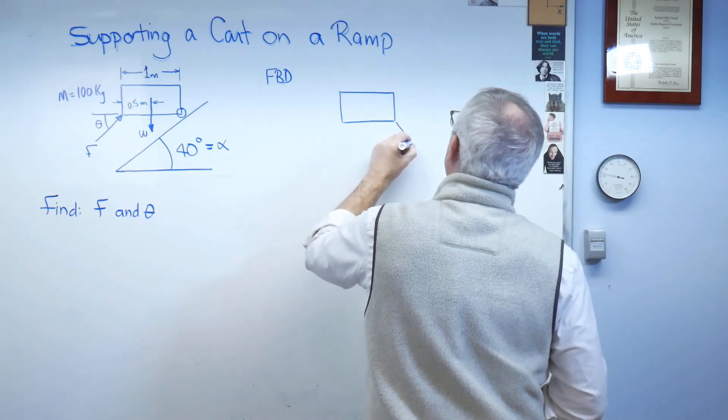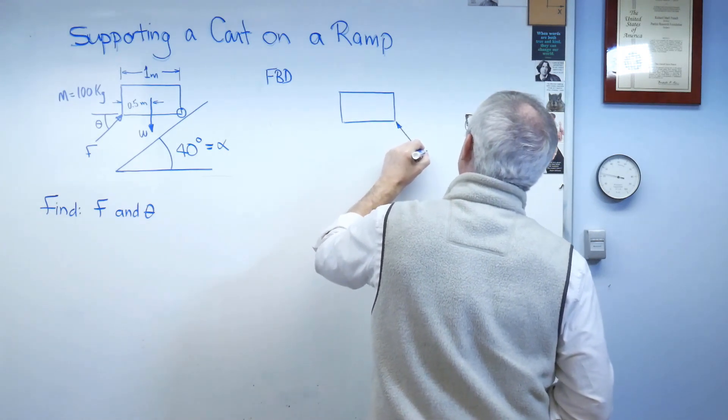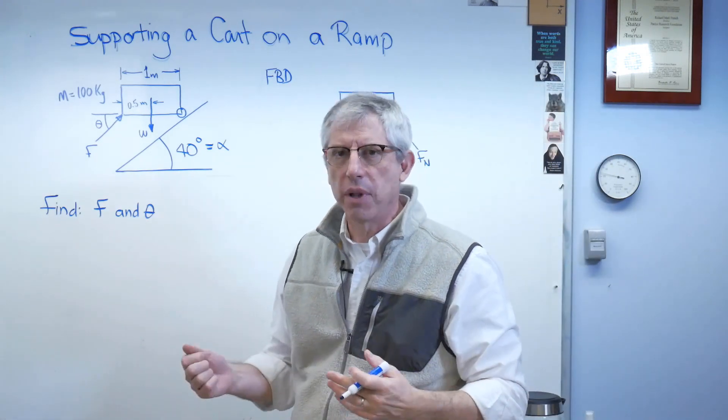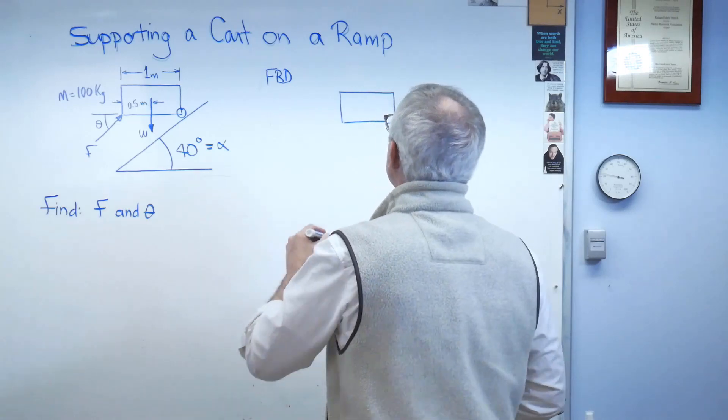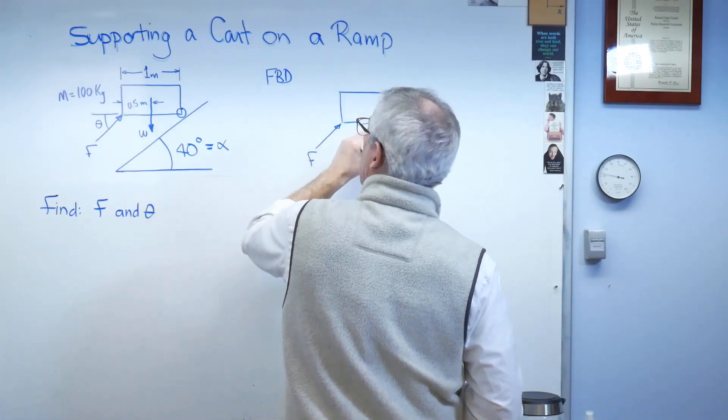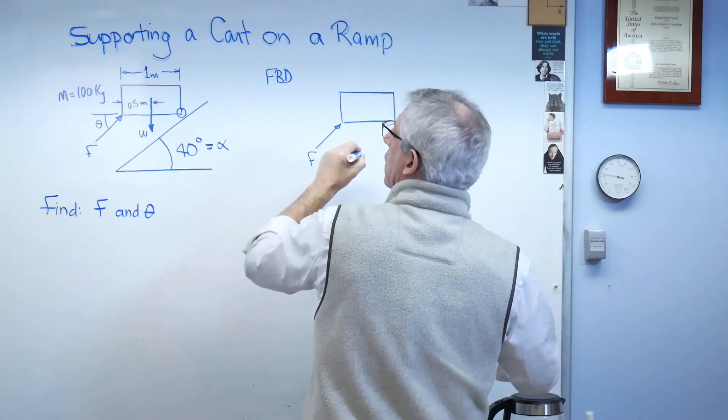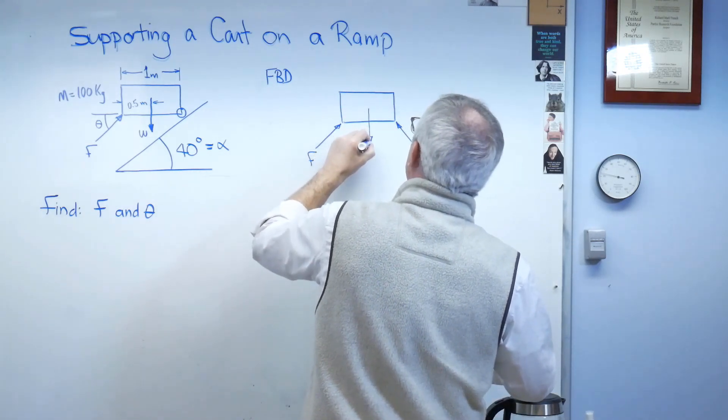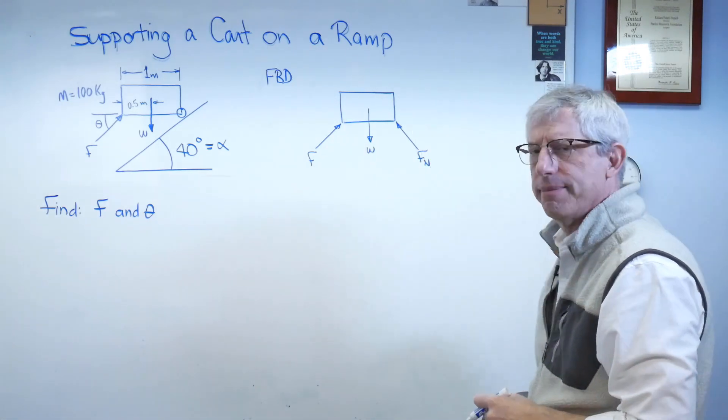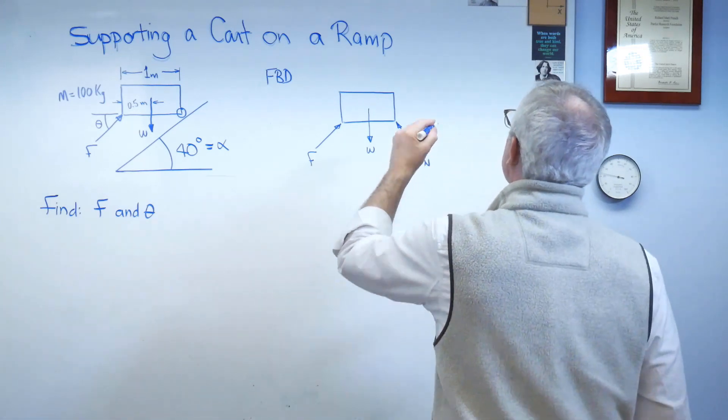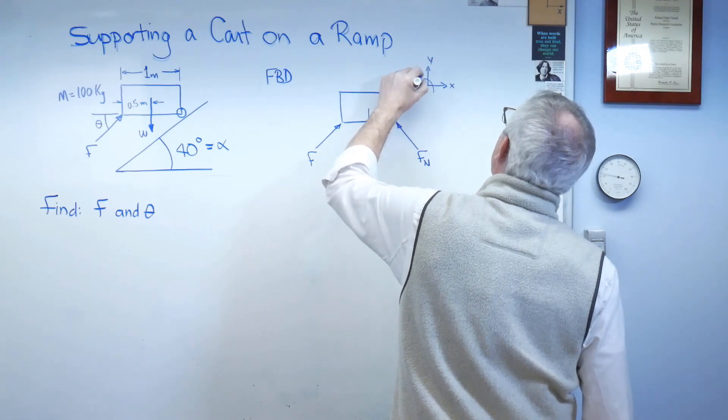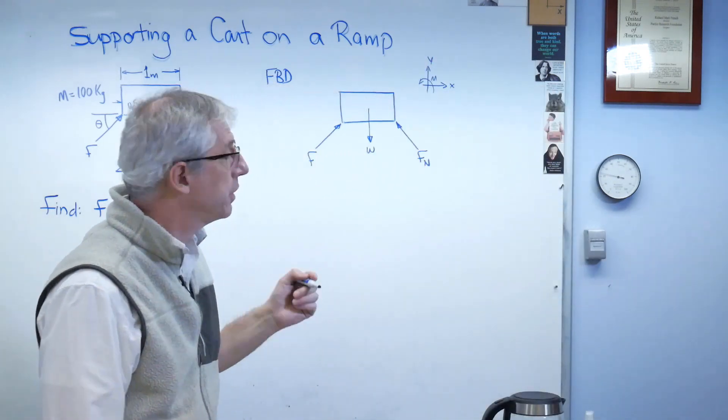So here's force, and this is called a normal force. Normal meaning perpendicular, not normal and abnormal, but normal in this case means perpendicular. And I've got the applied force there and the weight there. Well, it's not a free body diagram yet. Hang on. Now it's a free body diagram. You have to have positive sign convention.